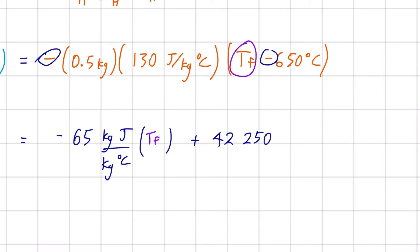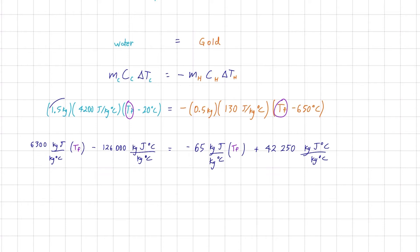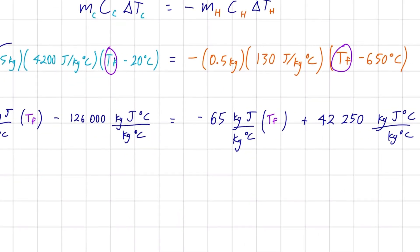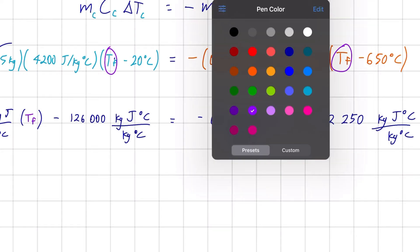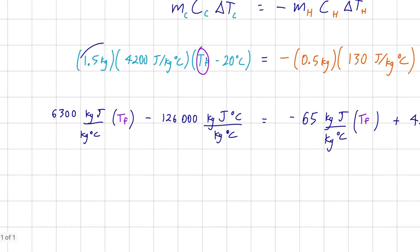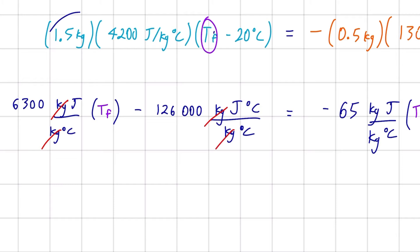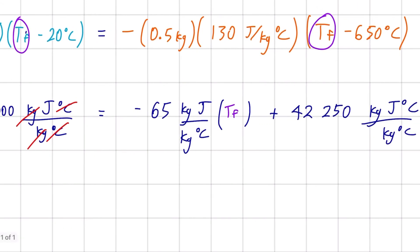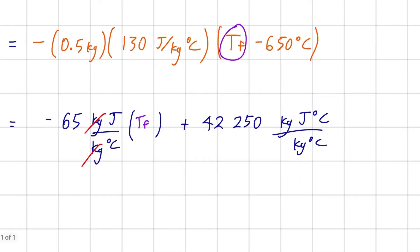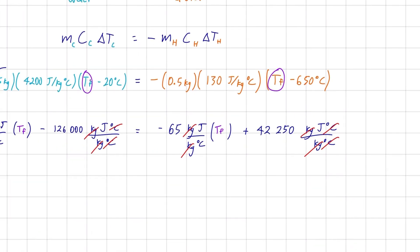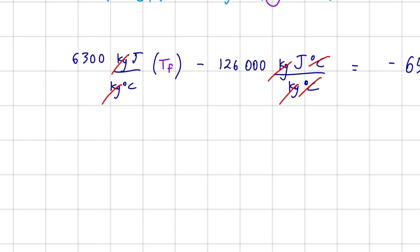Now we can see that units cancel out: kilograms cancel with kilograms, and degree Celsius cancels with degree Celsius throughout. This simplifies the first term to 6300 joules per degree Celsius times Tf.